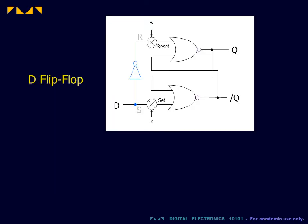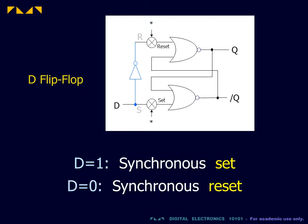In the D or data flip-flop, the R and S inputs are tied together by a NOT gate. The flip-flop therefore performs synchronous set or reset depending on whether the input D is 1 or 0.